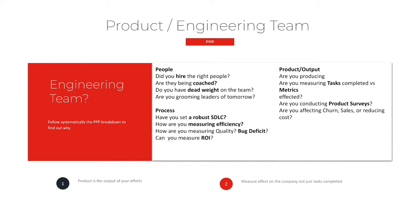Product engineering: most everybody here is technical so they understand this. Same issue — did you hire the right people, are they being coached, do you have dead weight, are you grooming them to become leaders? For process: do you have a robust SDLC, are you measuring efficiency, do you have a bug deficit, can you measure the ROI of all the efforts? At the end of the day, are you producing a product that people want to buy, and are you affecting churn, sales, and reducing cost?